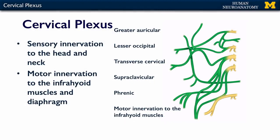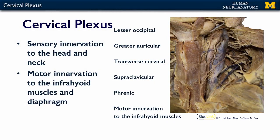Looking at the dissection images: here you can see the supraclavicular nerves headed out toward where the clavicle is. This is the reflected sternocleidomastoid muscle, which is not innervated by the cervical plexus. Here are the supraclaviculars, and here are the motor branches coming down to those infrahyoid muscles. It's hard to see them all in any one dissection, but you can see some of them.